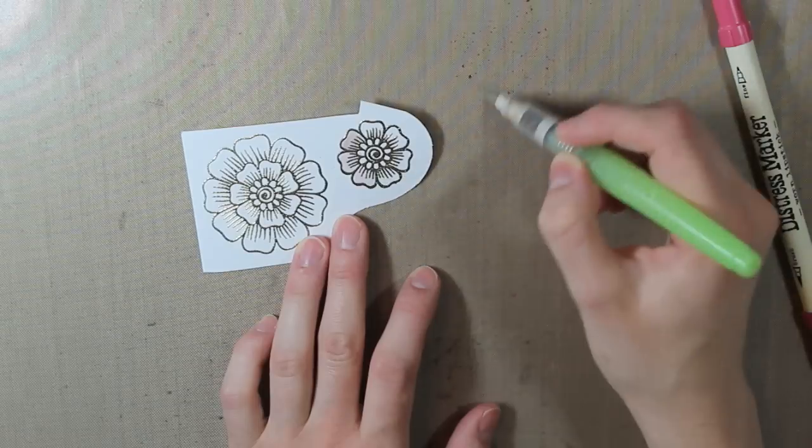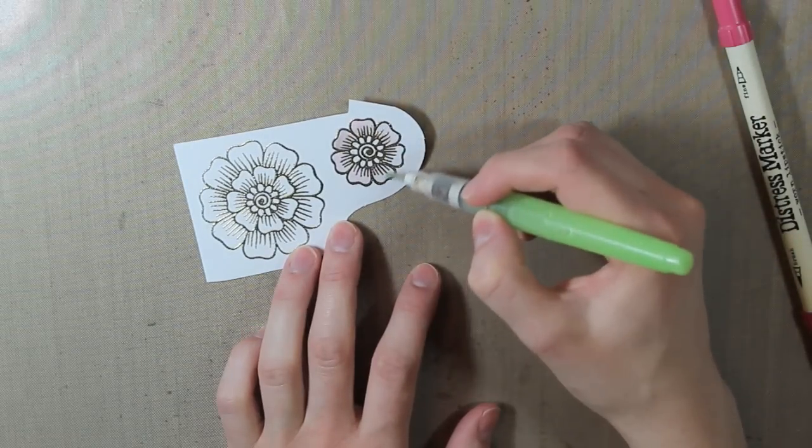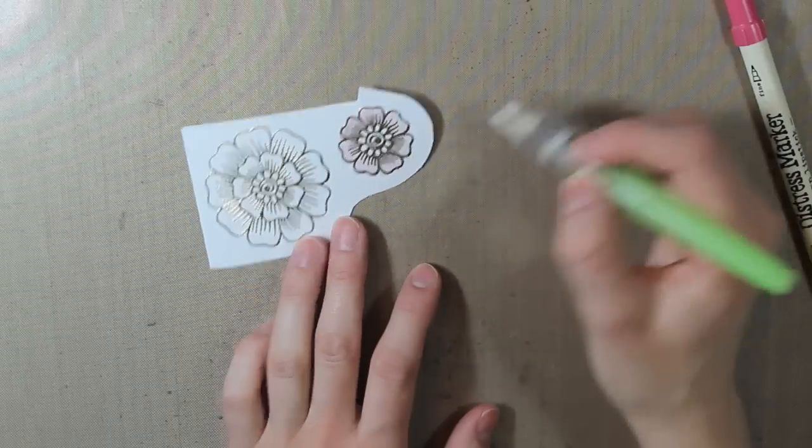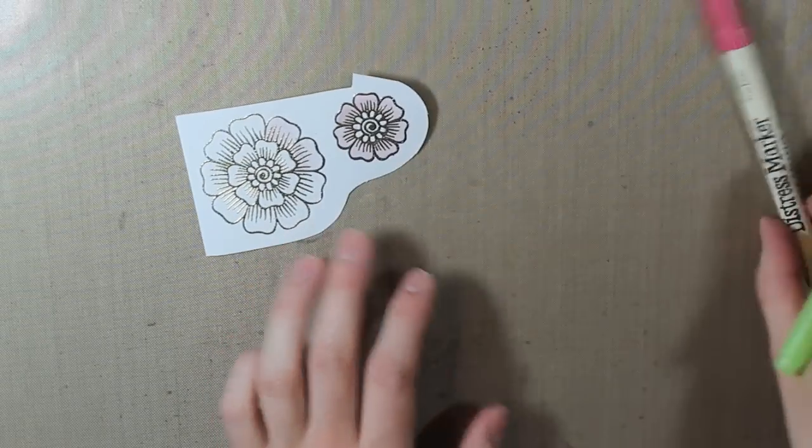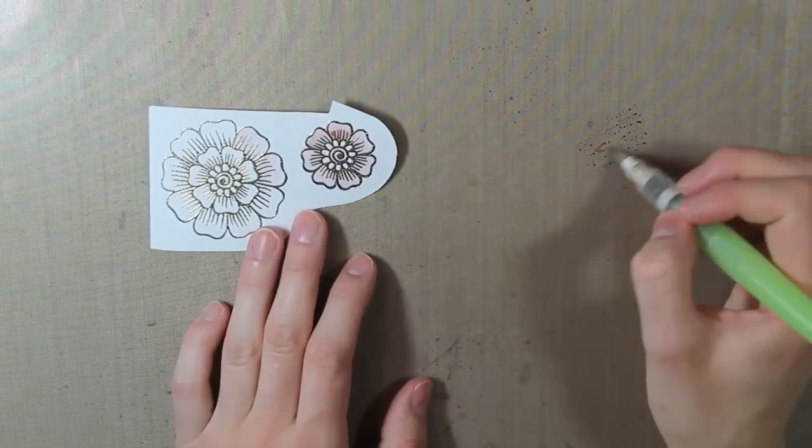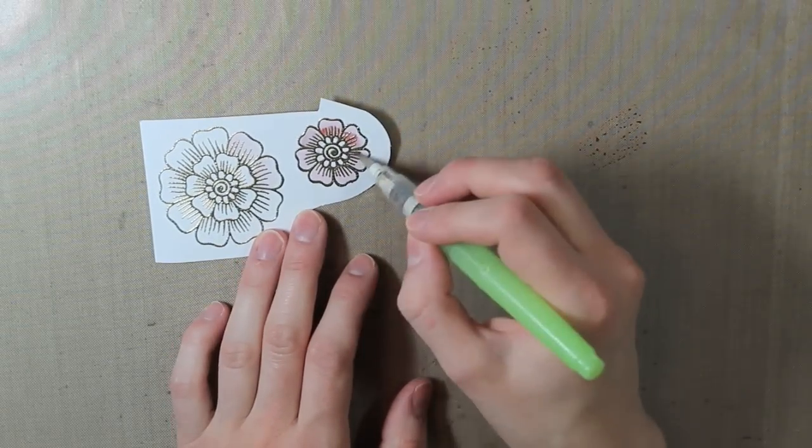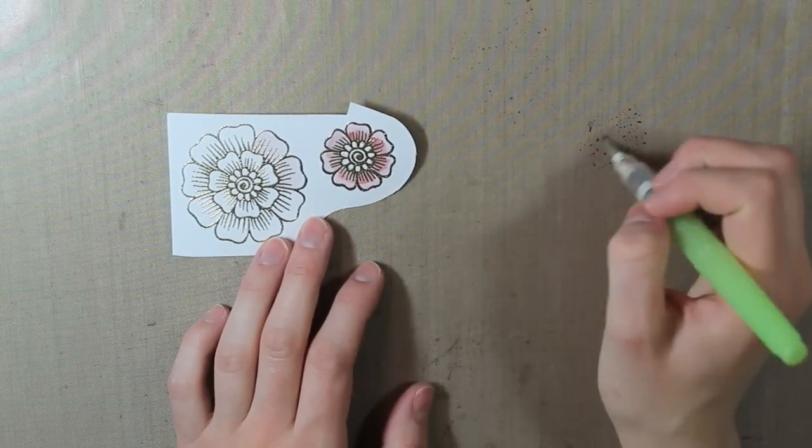And I'm working in smaller areas just because I want that to stay wet while I add the shading in with the darker color. So I'll go in then with my Worn Lipstick and just add that to the inner edges of the petals. It just creates some shading on there and a little bit more depth.